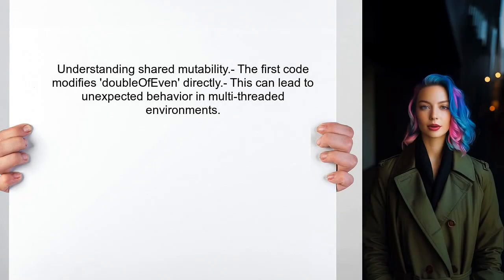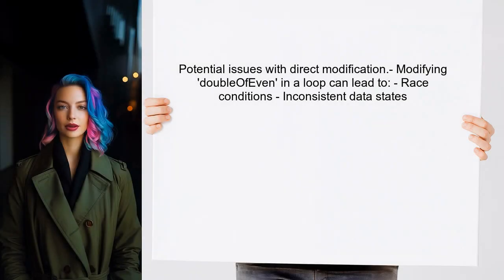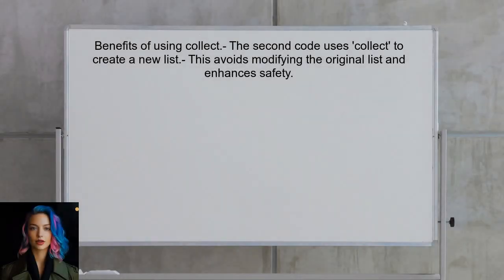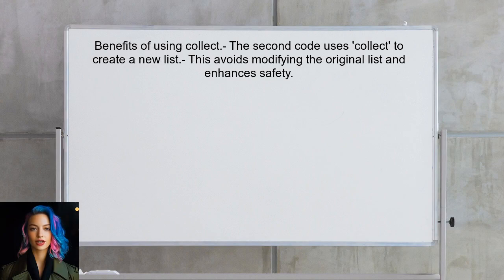To understand why shared mutability is considered a bad habit, let's first look at the first piece of code. The user is modifying a list called doubleOfEven directly within a forEach loop. When elements are added to doubleOfEven in the forEach loop, it can cause issues if multiple threads access this list simultaneously, because the list state can change unexpectedly. In contrast, the second piece of code uses the collect method, which creates a new list without modifying the original one. This approach is safer and avoids the pitfalls of shared mutability.